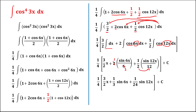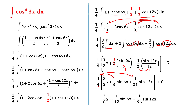Finally, we distribute the 1 over 4 factor: the first term becomes 3 over 8 x, the second term becomes 1 over 12 sine 6x — wait, distributing 1/4 across: 4 times 24 equals 96, so the last term becomes plus 1 over 96 sine 12x, plus C.